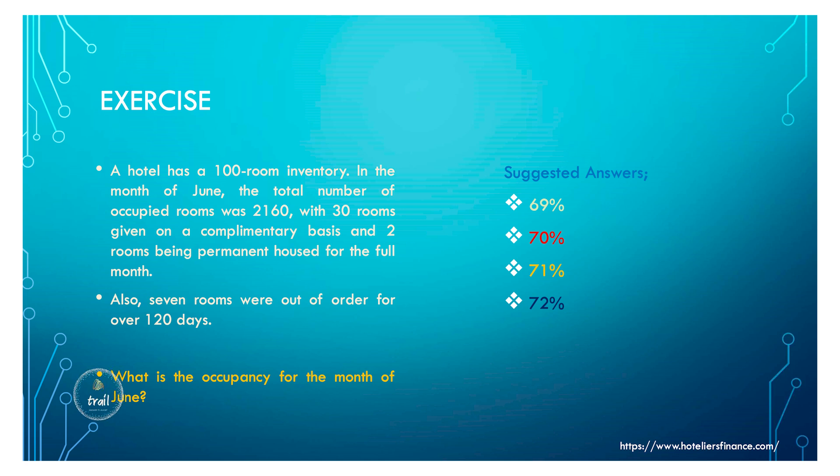Here's an exercise: a hotel has 100 rooms. In June, total occupied rooms were 2,160, with 30 rooms given on a complementary basis, two rooms as permanent house use for the full month, and seven rooms out of order for 120 days. Calculate the occupancy for June. Suggested answers are 69%, 70%, 71%, or 72% — do this exercise to find out.